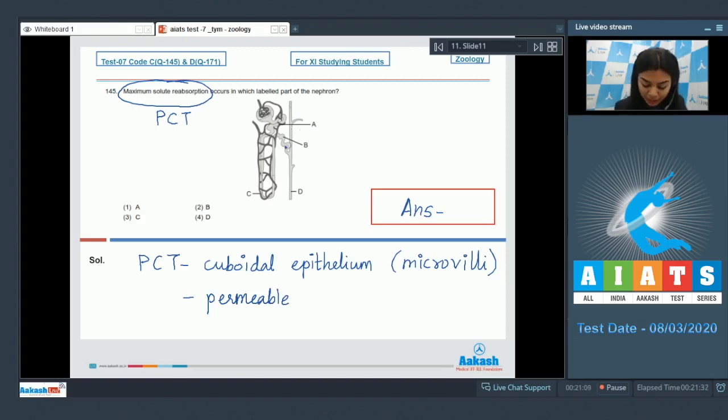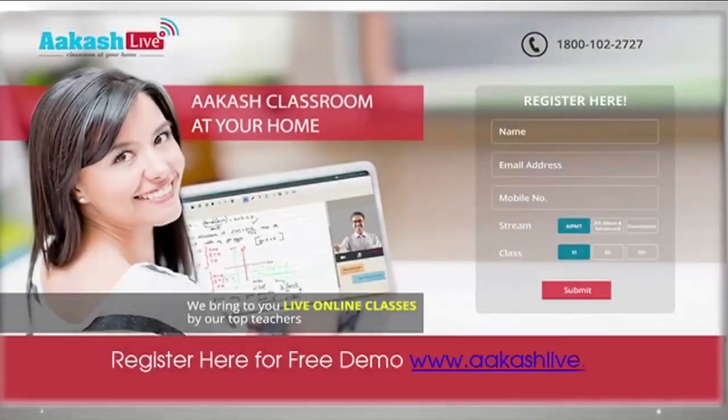PCT is marked by A here. B labels DCT, C is labeling vasa recta, and D is indicating towards collecting duct. The right answer is A, which indicates towards PCT, option number 1.